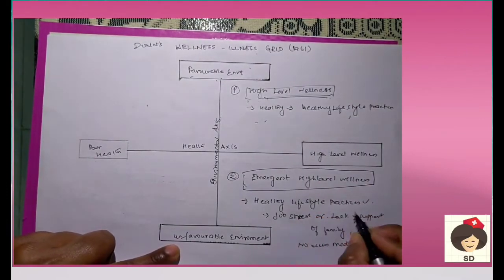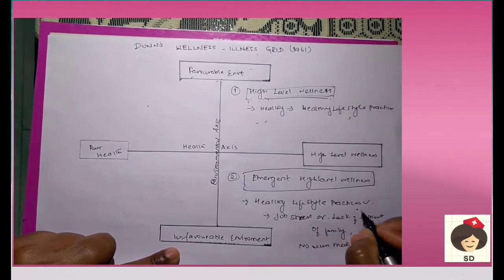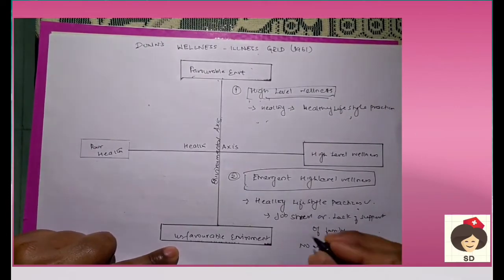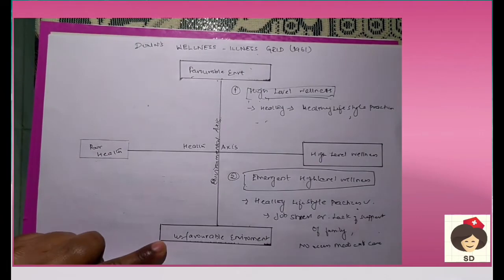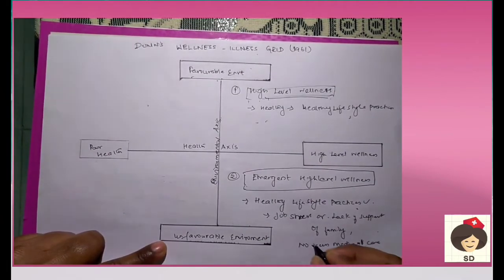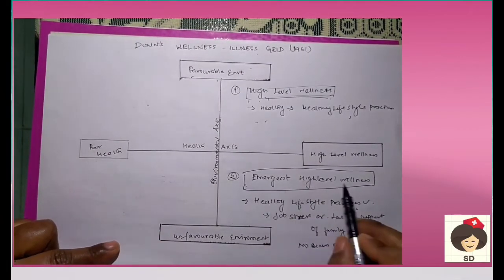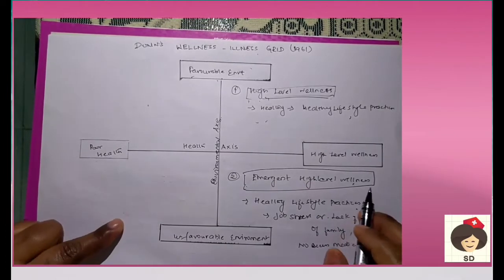When a person knows what healthy lifestyle practices are but cannot follow them due to an unfavorable environment — such as lack of support or no access to medical care — then the person is in emergent high level wellness.